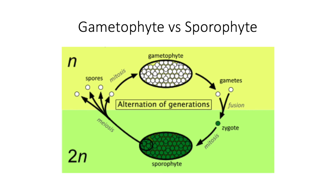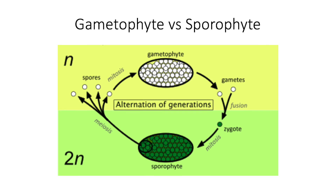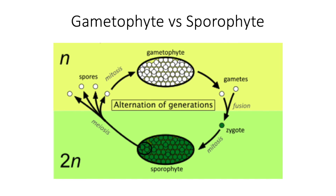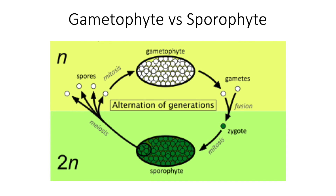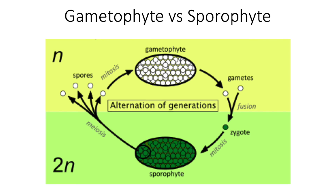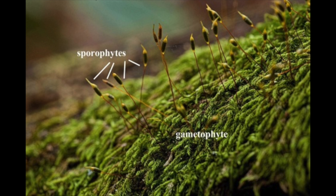The alternation of generations is the alternation of a sexual phase and an asexual phase in the life cycle of an organism. The sexual phase is called the gametophyte, which produces gametes and sex cells, such as bryophytes, mosses, and liverworts. The asexual phase is the sporophyte generation, which produces spores, such as angiosperms and gymnosperms.